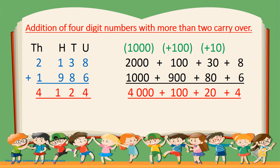Now we are going to add 4-digit numbers with more than 2 carryovers. Here I have expanded the numbers so you can clearly understand the carryovers. The numbers given are 2,138 and 1,986. Once again you have 4-digit numbers with Tens, Hundreds and Thousands as place values. How to expand the numbers? The given digit you have to multiply it by its own place value. So: 2 × 1000 = 2000, plus 1 × 100 = 100, plus 3 × 10 = 30, plus 8 × 1 = 8. Likewise, I expanded the numbers. Now let's try to add the expanded numbers.